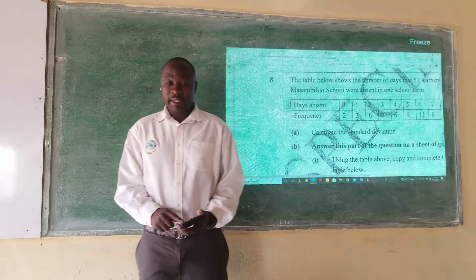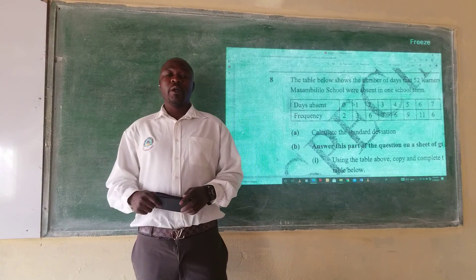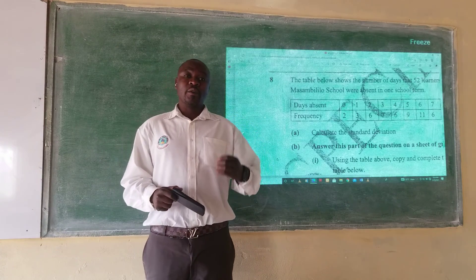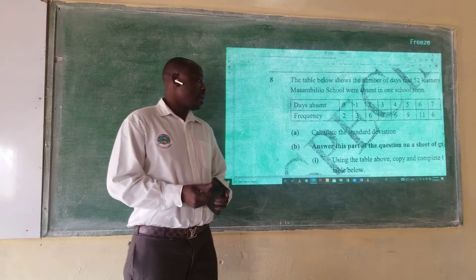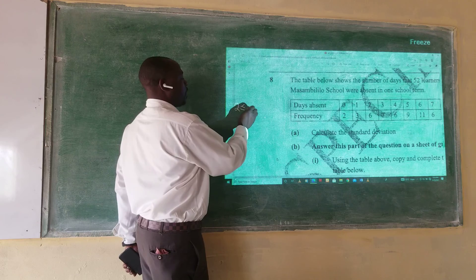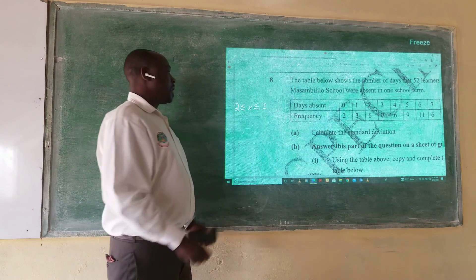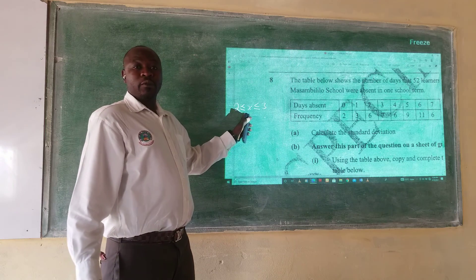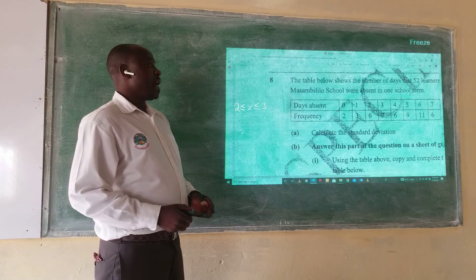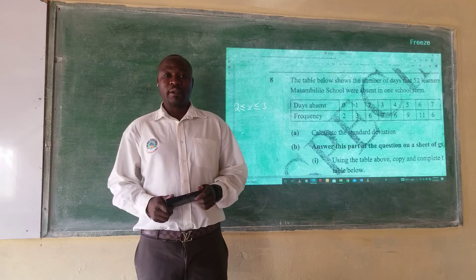Hello and welcome to today's lesson. In this lesson we're going to be looking at statistics and we're going to look at ungrouped data. Ungrouped data is data that has not been placed in classes, like for example 2 ≤ x < 3. Such type of data we call grouped data. But what we're dealing with today is ungrouped data, and we are going to specifically talk about how to find the standard deviation of ungrouped data.